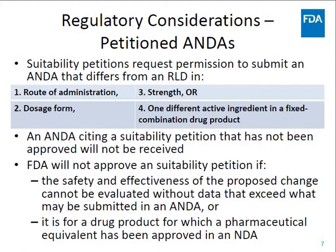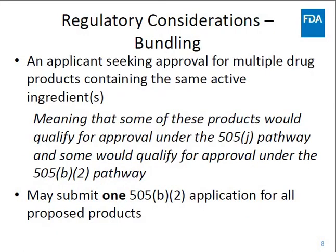A prospective applicant may submit a suitability petition to FDA requesting permission to submit an ANDA that differs from an RLD in the route of administration, dosage form, strength, or one different active ingredient in a fixed combination drug product. An ANDA citing a suitability petition that has not been approved — meaning the petition is pending or has been denied — will not be received for review. FDA will approve a suitability petition unless the safety and effectiveness of the proposed change cannot be adequately evaluated without data from investigations that exceed what may be required for an ANDA, or the petition is for a drug product for which a pharmaceutical equivalent has been approved, including a B2 application that referenced the same listed drug.